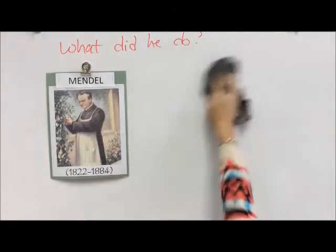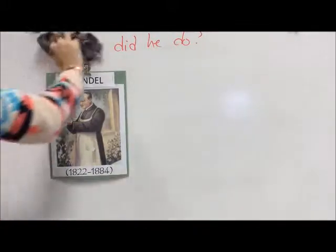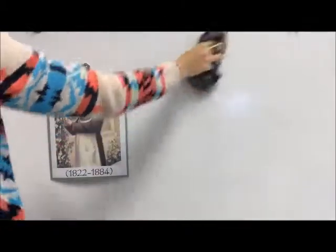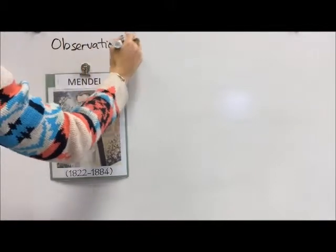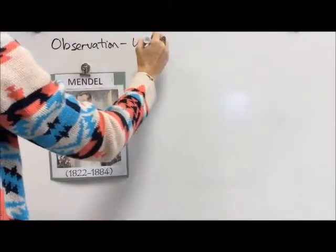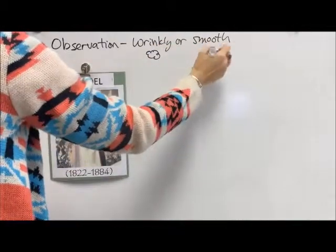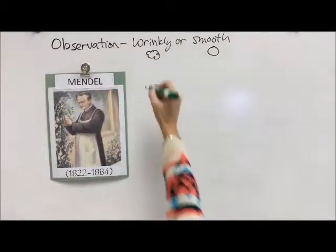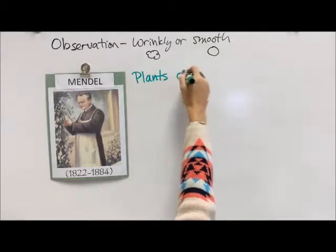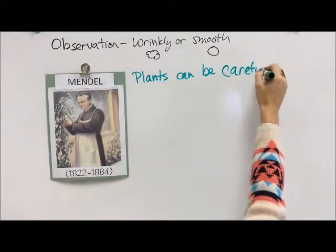People don't really like the look of wrinkly peas, so they have bred our peas so that all of our peas are smooth now. They've done that because of all the work that Gregor Mendel did — without Mendel you'd be eating wrinkly peas. So he made an observation: peas are wrinkly or smooth.